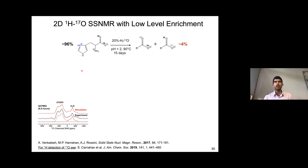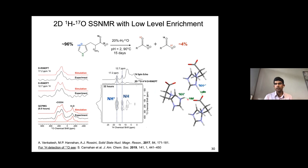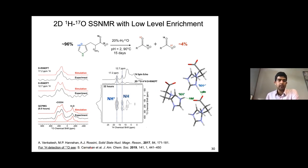We tried DRNF experiments on a 4% oxygen-17 labeled histidine sample. A standard CPMG took about eight hours, and the two O17 sites are not resolved at 9.4 T. Whereas with the 2D DRNF experiment, we can see from the neutron structure that the two NH protons are correlated to different oxygens, allowing us to extract slices from the indirect dimension and fit those to respective O17 parameters. There is also another paper from my colleague Scott Carnahan who has studied a number of other compounds for proton detection of O17.